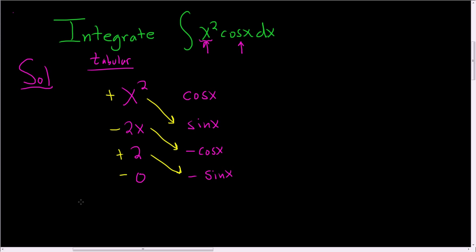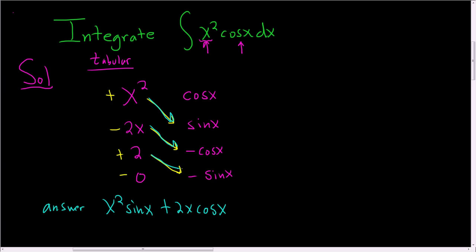And the last step is to write the answer down. Following the first arrow, we get x squared sine x. Following the second arrow, negative and negative is positive, so we get 2x cosine x. And following the last arrow, we get minus 2 sine x. And then we still have the plus C at the end.